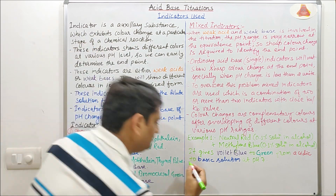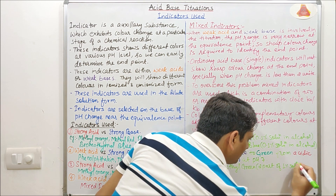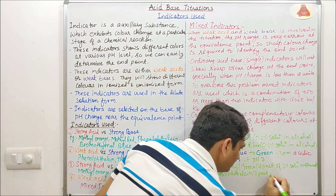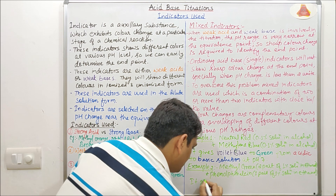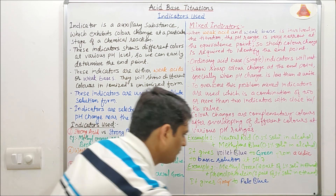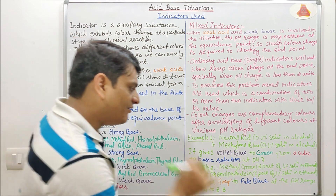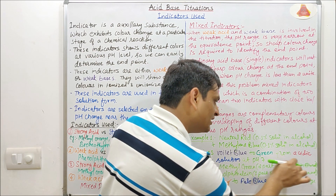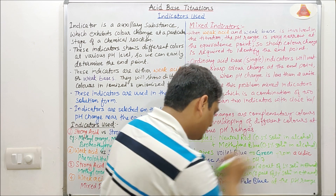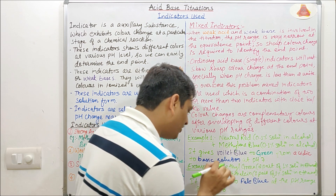In the second example, we have taken methyl green — two parts of a 1% solution in ethanol — plus phenolphthalein — one part of a 1% solution in ethanol. This mixture gives a gray to pale blue color change at the pH range of 8.4 to 8.8.